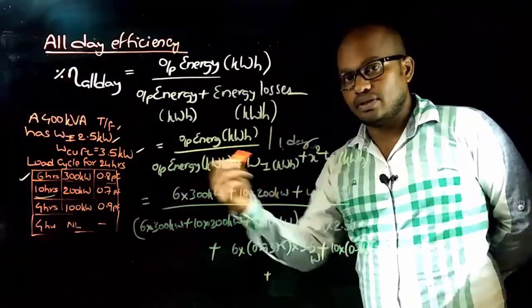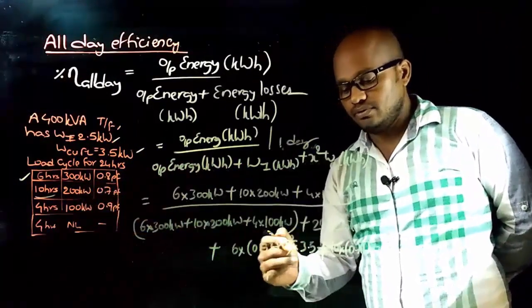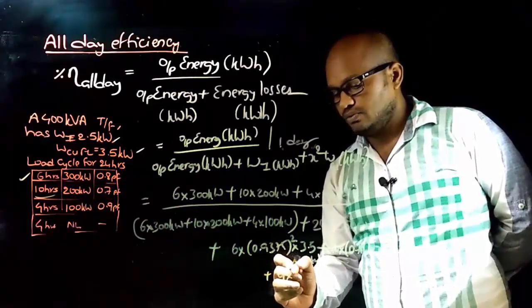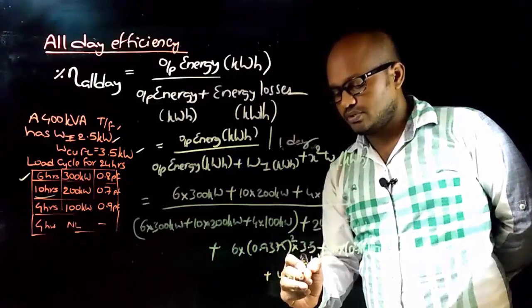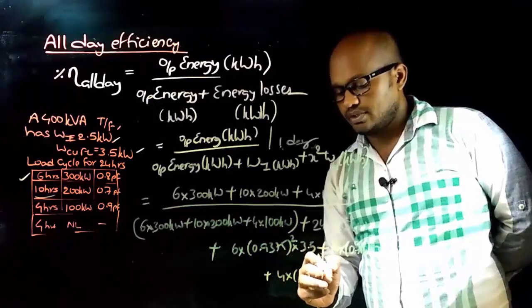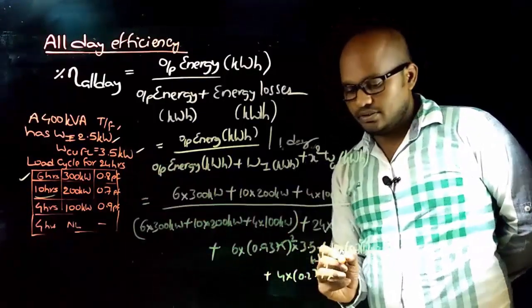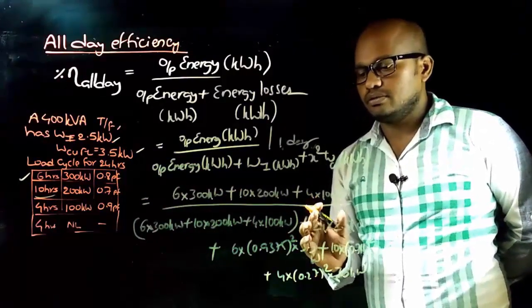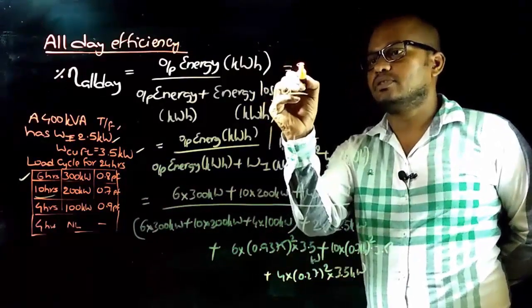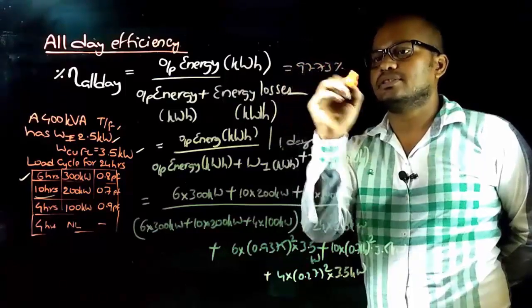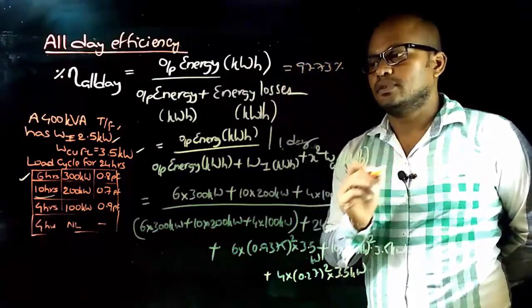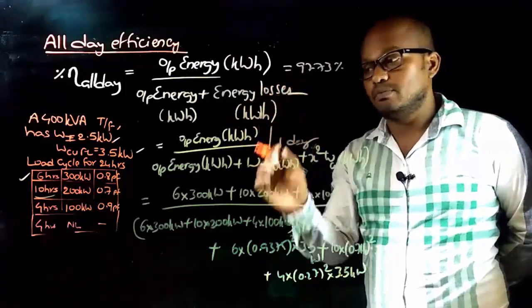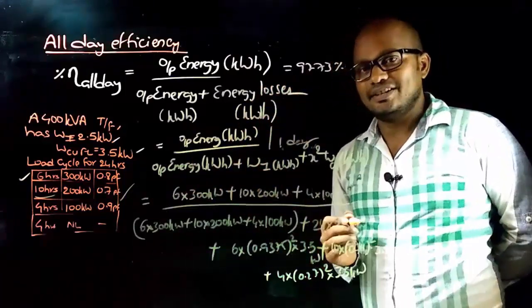For the next 4 hours, x is approximately 0.27, so copper loss = 4 × (0.27)² × 3.5 kilowatts. Solving the complete expression gives a percentage all-day efficiency of approximately 97.73%.